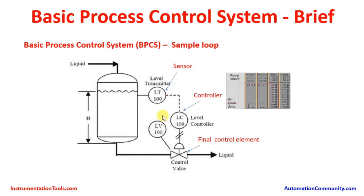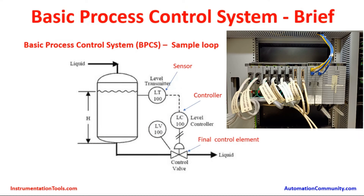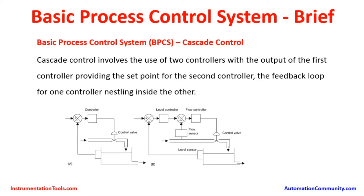Pictorially it is represented as a controller. Basically it looks like this, wherein the controller will have a power supply unit, a central processing unit with microprocessor-based controllers, and input and output modules, etc. DCS and BPCS are used alternatively but both represent the same thing. Cascade control involves use of two controllers, with the output of the first controller providing a set point for the second controller, with the feedback loop of one controller nested inside the other.